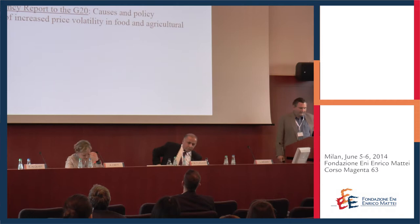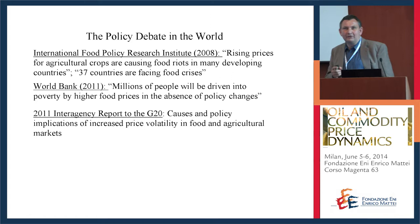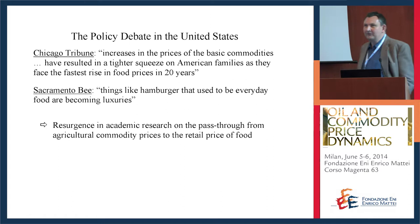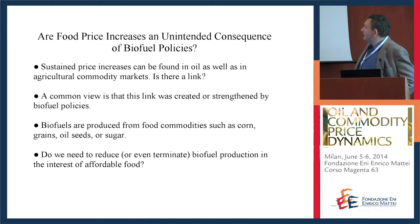People care about food prices for two reasons. First, millions of people in poor countries are starving — that's the line taken by the G20, saying increased food price volatility is causing problems worldwide. Second, closer to home, it's a problem for poor people in the US, because when food prices go up it's hard to put food on the table. There has been increased interest in the pass-through from higher agricultural commodity prices to retail food prices in the US.